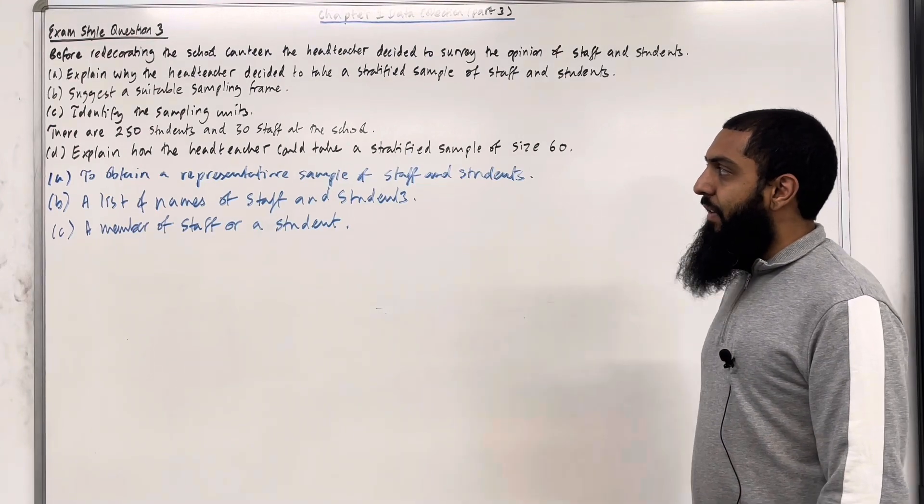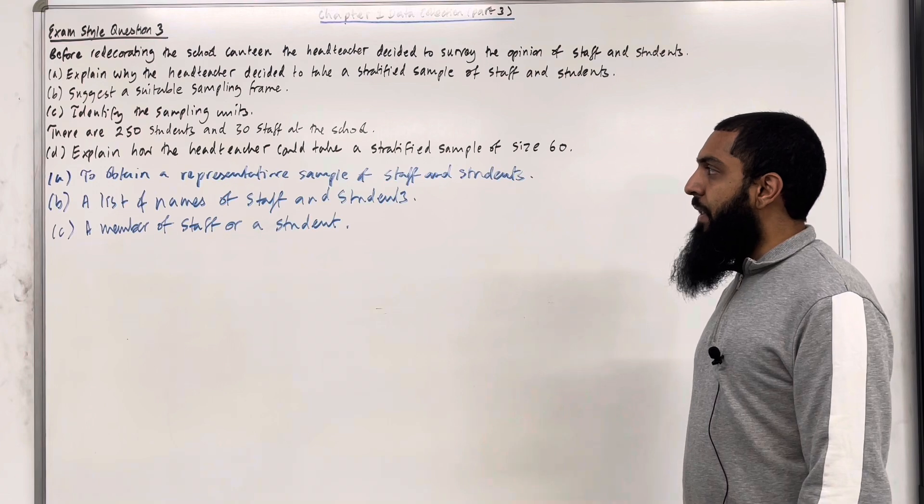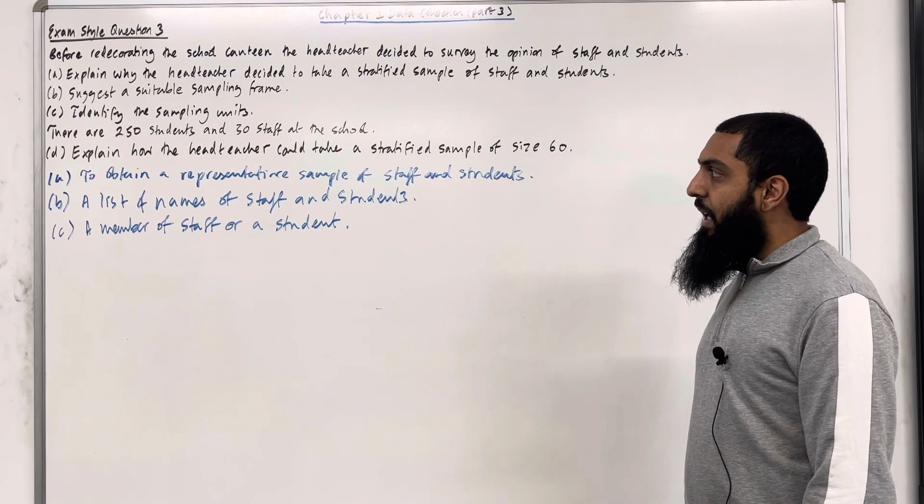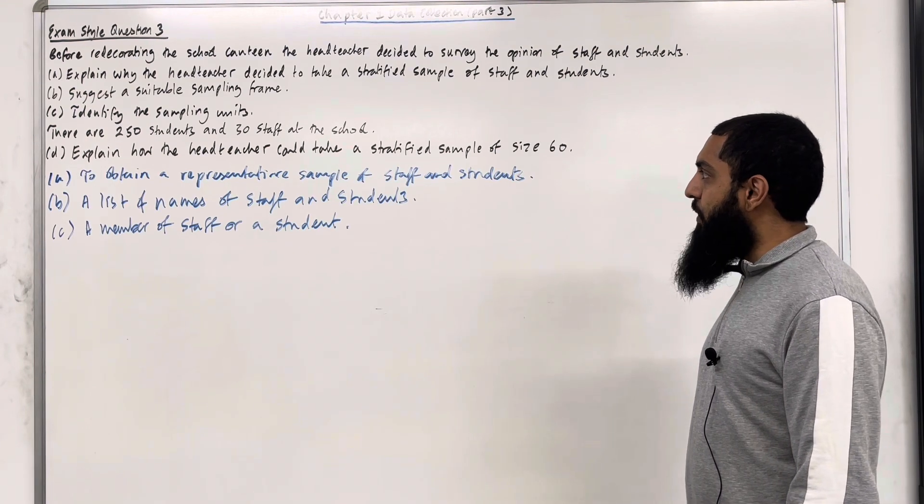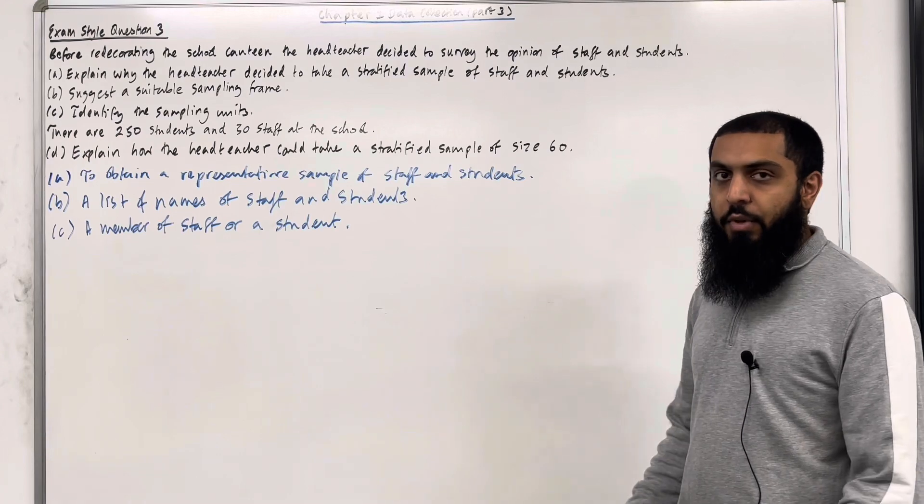There are 250 students and 30 staff at the school. Part D: Explain how the headteacher could take a stratified sample of size 60. Let's move on to part D.